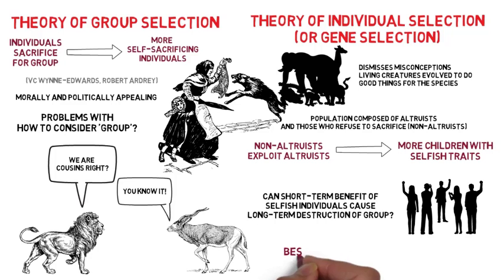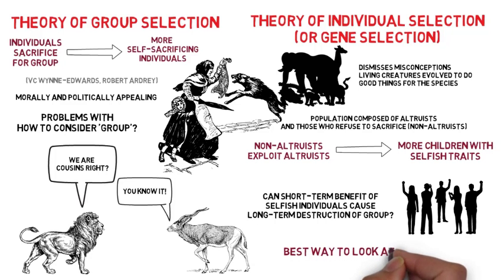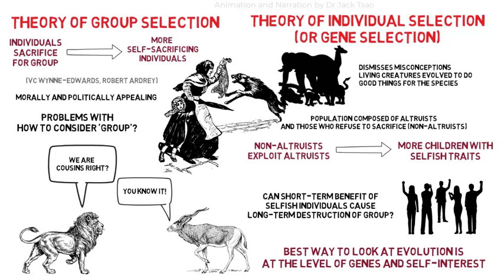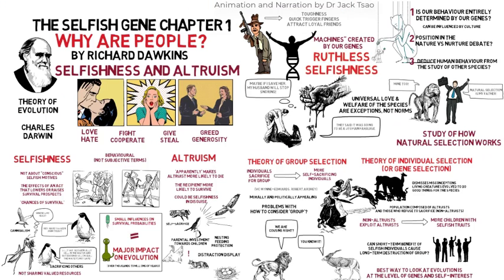Dawkins argues that the best way to look at evolution is to start at the level of the genes and their self-interest.